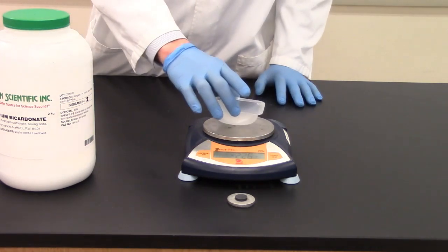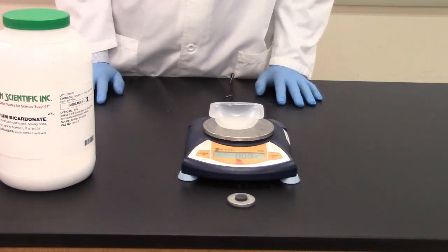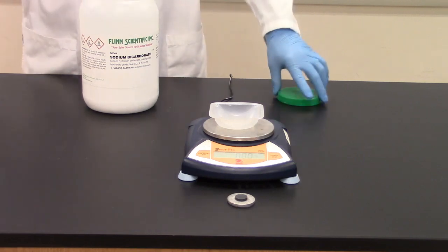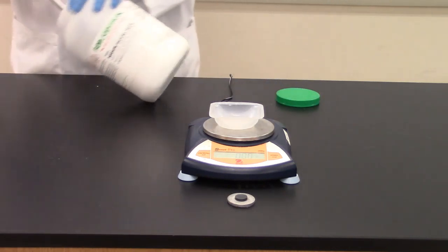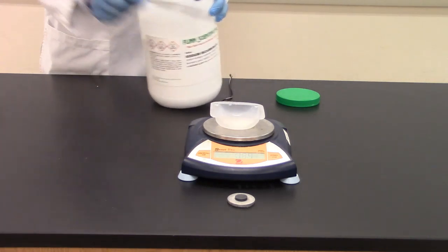So I'm going to go ahead and put my weigh boat on the balance here and I'm going to press the zero button. And then I'm going to scoop out an amount of sodium bicarbonate and again the mass is for you to determine. I've got my mass on there.